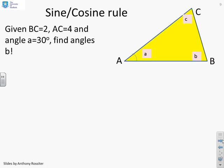What about this one, then? You'll see here I've been given BC equals 2, AC equals 4, and the angle A in here is 30 degrees. And what we've been asked to find is this angle in here, B. Now you can see clearly I've got an angle and an opposite side, and I've got a side, and I want the opposite angle.